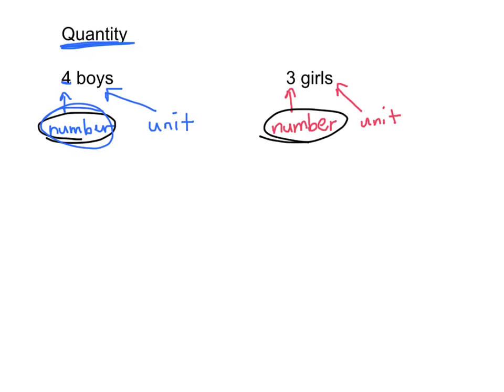Ratios only care about the number, but the number in the right order of what they're asking you for. A quantity is when you get both a number and a unit. So in the quantity four boys, the number is four and the unit is boys.